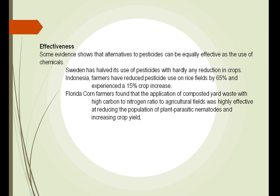Although the data is not strong, we have some indication that alternative pesticides can be equally effective as chemicals. In Sweden, they cut their use of pesticides in half and don't see much difference in crop production. In Indonesia, they cut pesticide use by 65% yet still achieved a 50% crop increase. In Florida, using composted yard waste is highly effective at reducing plant parasitic nematodes and increasing crop yield.